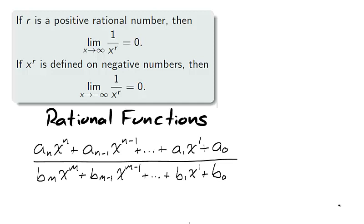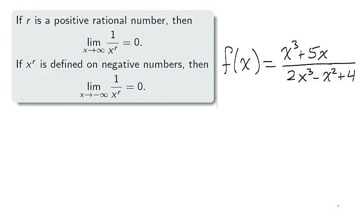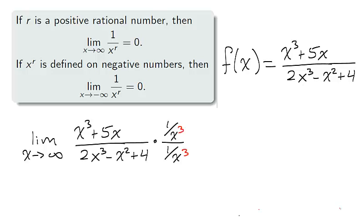To determine the limit at infinity of a rational function, we multiply by 1 over x to the m in the numerator and the denominator, where m is the degree of the polynomial in the denominator. To find the limit as x approaches infinity of the rational function f, we multiply by 1 over x cubed in the numerator and the denominator.